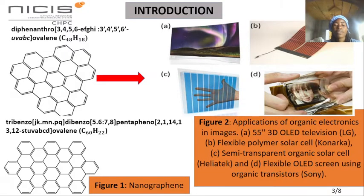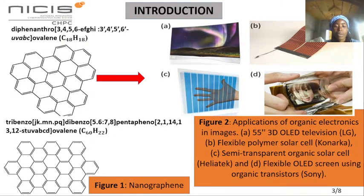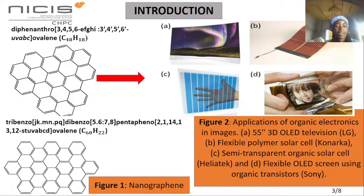Nowadays, the fabrication of electronic devices based on organic compounds is the focus of research. Organic compounds are used to design lighter televisions, more flexible solar cells, transparent and flexible displays, as shown respectively in figures A to D. Figure 1 shows two organic molecules having carbon and hydrogen as elements. In the literature, these molecules have been synthesized and classified as organic semiconductors.